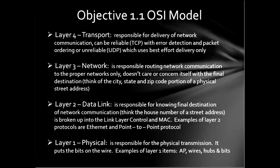You can think of the network layer as the city, state, and zip code portion of a physical address. The data link layer is responsible for knowing the final destination — you can think of it as the house number portion of the street address. It is broken up into two sub-layers: the LLC, which is link layer control, and the MAC. A couple of examples of layer two protocols are Ethernet and point-to-point protocol, which you will get into later in this course.